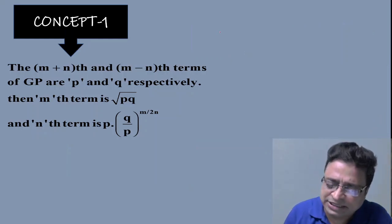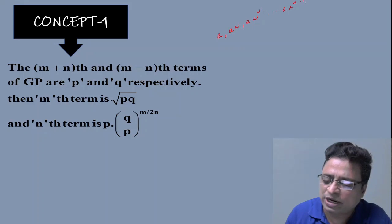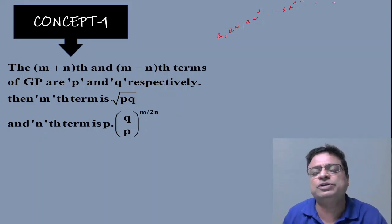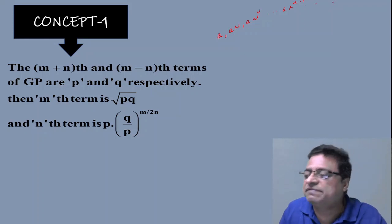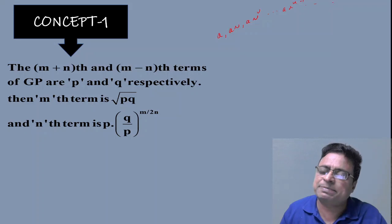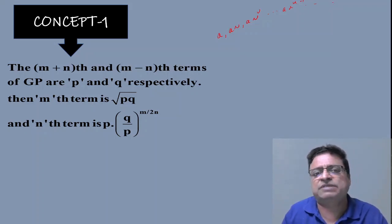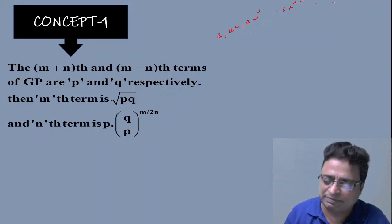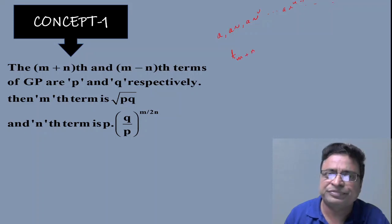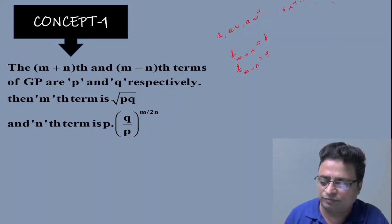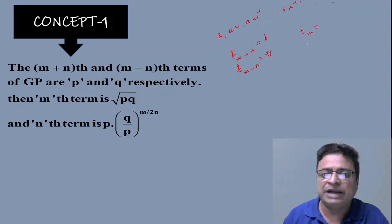Concept number one: In general, the series in the form a, ar, ar², ..., arⁿ⁻¹ where a ≠ 0 is called the geometric progression, where a is the first term and r is the common ratio. Now, if the (m+n)th and (m−n)th terms of a GP are p and q respectively — that means T(m+n) = p and T(m−n) = q — then what is the mth term and what is the nth term?